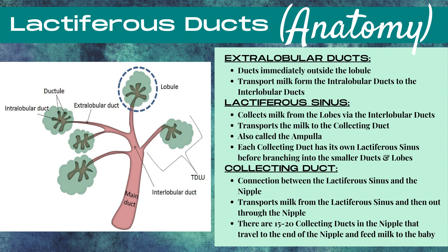Our next type of duct is the lactiferous sinus, which collects milk from the lobes via the interlobular ducts and then transports the milk to the collecting duct. The lactiferous sinus is also called the ampulla, and each collecting duct has its own lactiferous sinus before branching into the smaller ducts and the lobes.